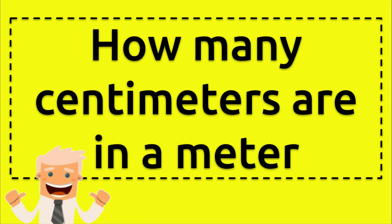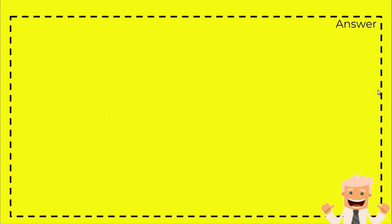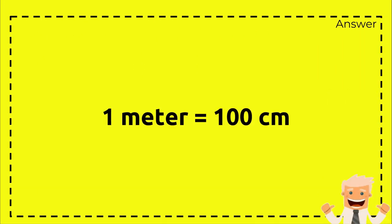Hi everyone, welcome back to my video. Today I'm going to answer a question about the conversion between centimeters and meters. The question is: how many centimeters are in a meter? Here's the answer: one meter equals 100 centimeters. That's all, thank you for watching, bye bye.